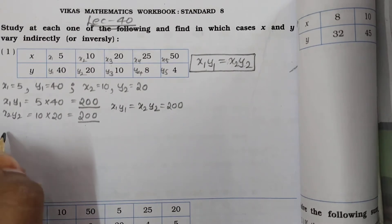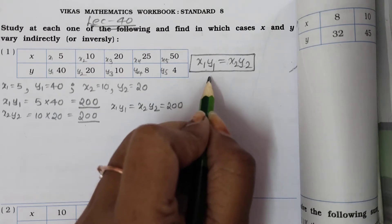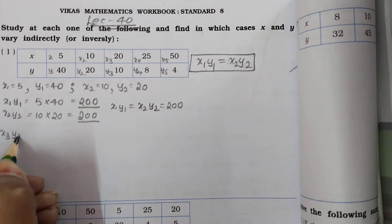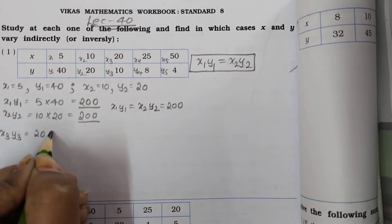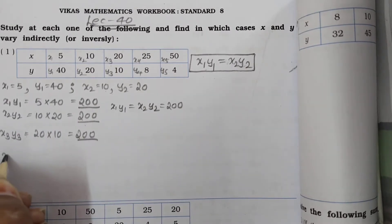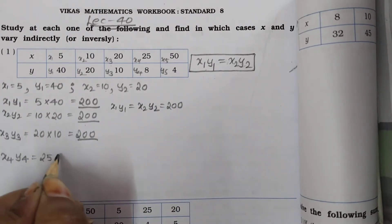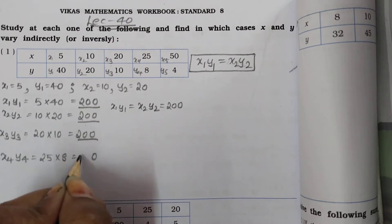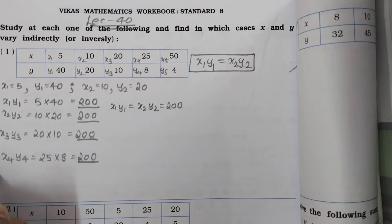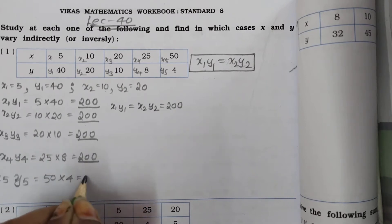अब x3y3 compare करेंगे x1y1 से — हमें सबको x1y1 के साथ compare करना है। x3y3 = 20 × 10 = 200। फिर x4y4 = 25 × 8 = 200। फिर x5y5 = 50 × 4 = 200। सबकी value 200 आ रही है।